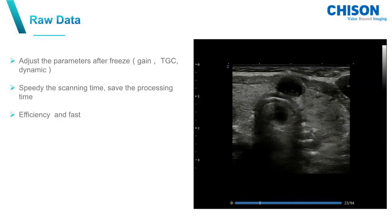Raw Data is commonly used for fast scanning purposes. Doctors can adjust the parameters after scanning in order to get a better image, so they can scan more patients during a given time.